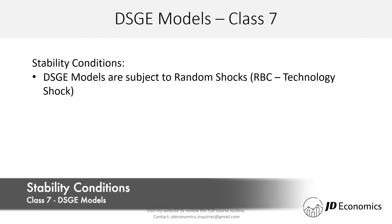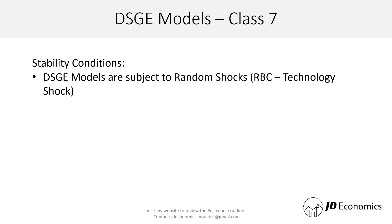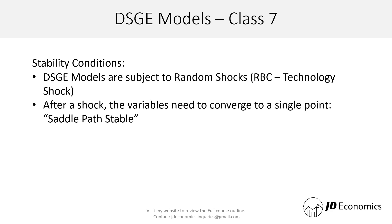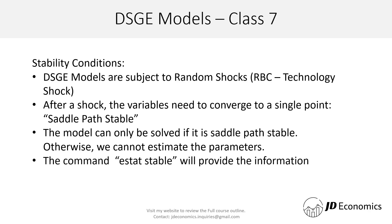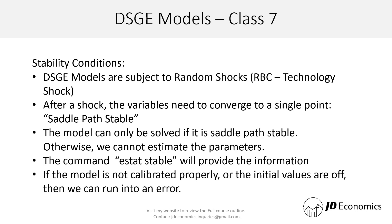Let's talk about the stability conditions. DSGE models are subject to random shocks — in the RBC model we know the shock is coming from technology. After a shock, the variables need to converge to a single point; that's what determines if they are saddle path stable. The model can only be solved if it is saddle path stable, otherwise we cannot estimate the parameters. If the model is not calibrated properly, or the initial values are off, we can run into an error.